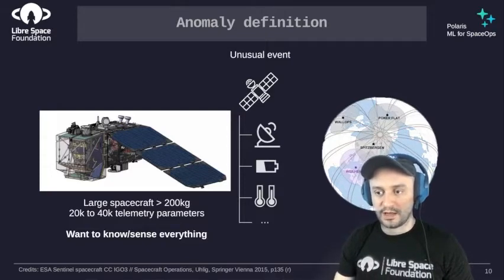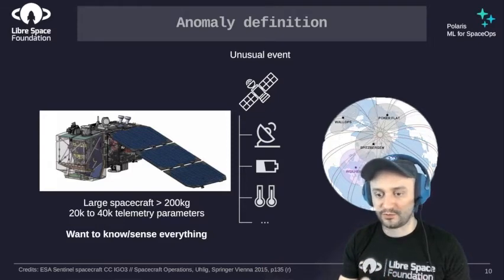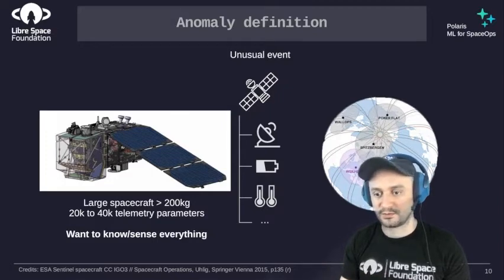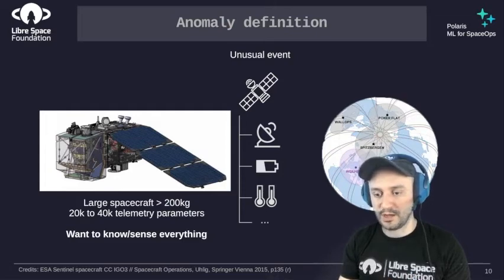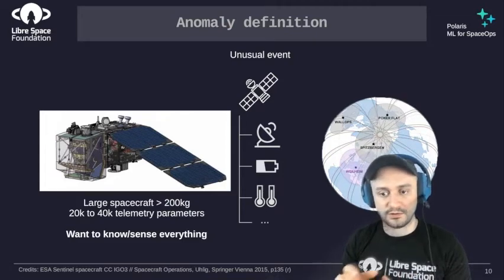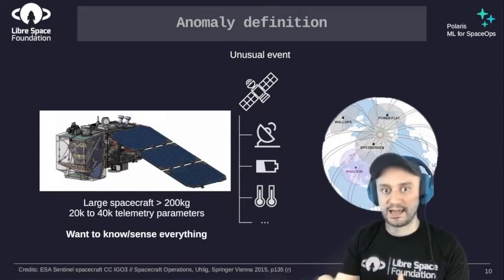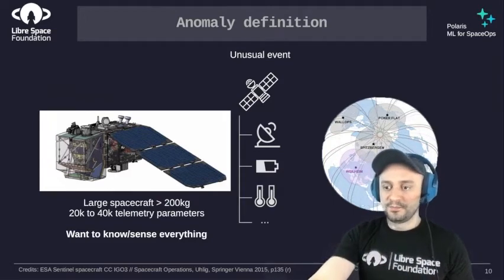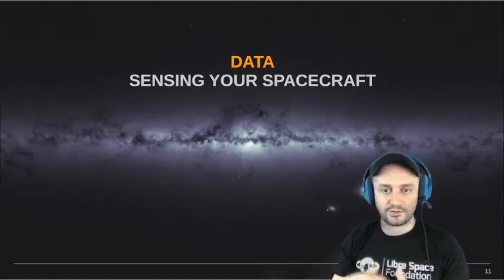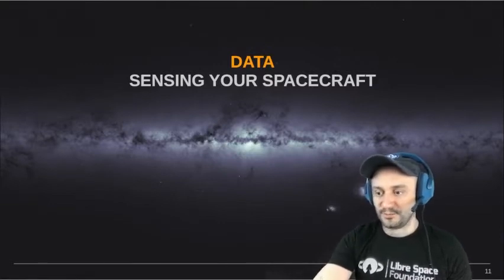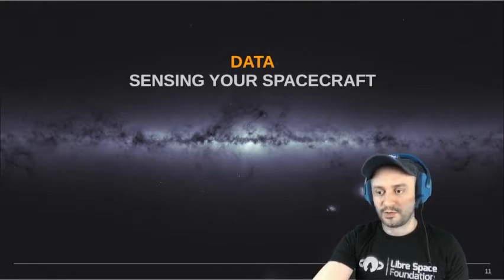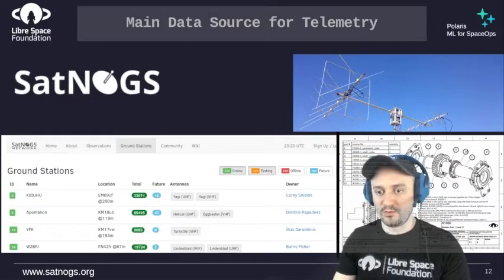One aspect we must address is defining what an anomaly is. On a spacecraft with 20,000 to 40,000 parameters, it's very hard to know what really constitutes an anomaly. Usually you get warnings from out-of-limits setups, and you want to sense everything from your spacecraft so you can analyze and diagnose. Generally, anomalies are unusual events. For Polaris, we get data from different sources — the main one being SatNOGS.